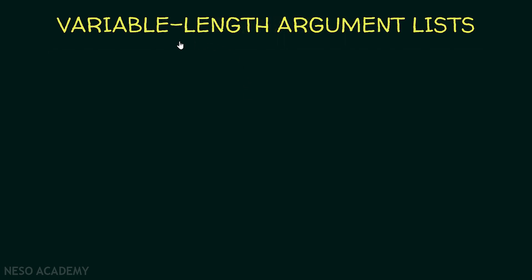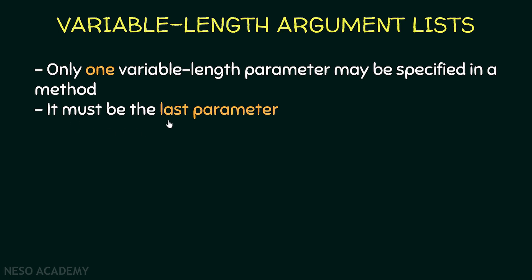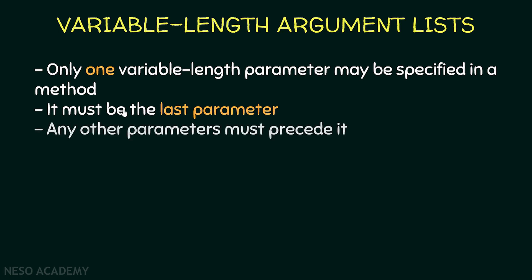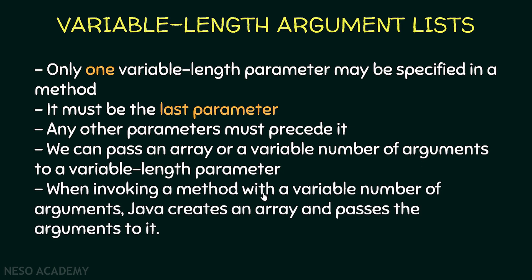Now let's talk more about variable length argument lists. First, only one variable length parameter may be specified in a method — we cannot have more than one. And this parameter must be the last parameter; in other words, any other parameters must precede it. Also, we can pass either an array or a variable number of arguments to a variable length parameter. When we call a method with a variable number of arguments, Java creates an array and passes the arguments to this array.